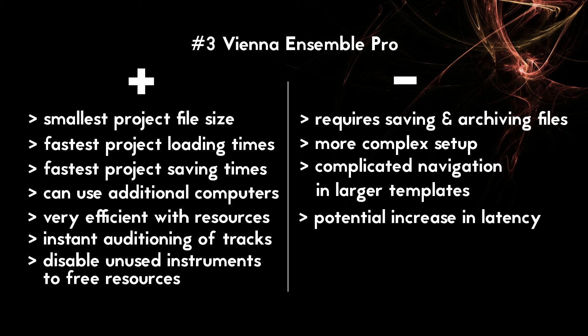Fourth, and perhaps the most notable difference, Vienna Ensemble allows you to use multiple computers. While even the most powerful single computer will eventually be brought to its knees, VE Pro allows you to expand by adding a second or third machine — or more; some composers use half a dozen computers or even more. Fifth, Vienna Ensemble is very efficient with computer resources and is reported to achieve better multi-core performance than Cubase or any other DAW. Sixth, every track is loaded and ready to go, so auditioning different instruments is very quick and very easy. And finally, Vienna Ensemble also has the option of disabling tracks, so you could disable less-used instruments if you're finding yourself running out of computer resources.